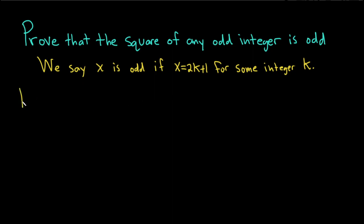Okay, let's go ahead and go through this proof. We have to show that the square of any odd integer is also odd. So we'll start by letting x be an odd integer.